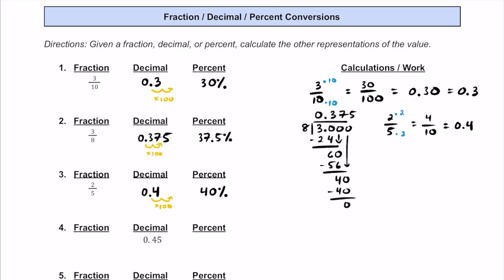For number 4, we have this decimal of 0.45, which we can also read as 45 hundredths. So as a fraction, that's going to be 45 over 100. We can also realize that they have a common factor of 5, so we can divide top and bottom by 5.